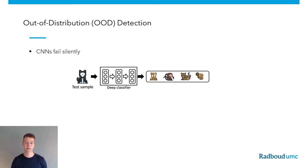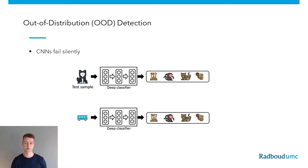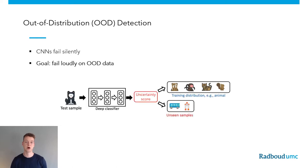Let's say we've trained a model to classify images belonging to a specific animal class. If we then give this model out-of-distribution data, such as a class it has never seen before during training, it will still predict an animal class. In that sense, this model is failing silently. On medical data, this can have big consequences.